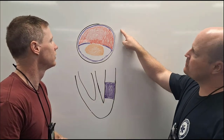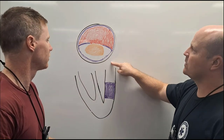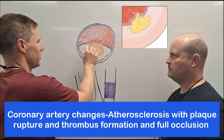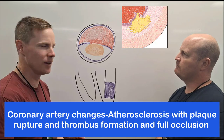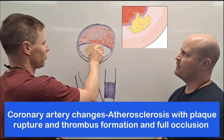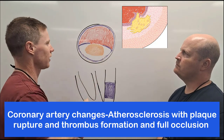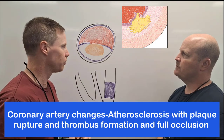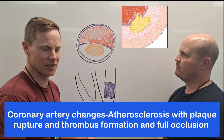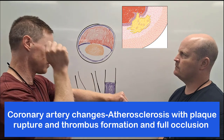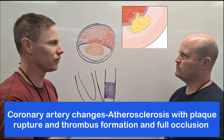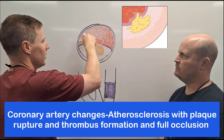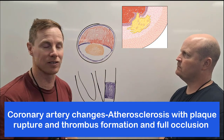Looking at our coronary artery, what do we see? We see atherosclerosis. We see a thin fibrous cap and it looks like it's ruptured, and it's injured or damaged the inner layer of the blood vessel. And as I said in the previous videos, if you cut yourself you're damaging the blood vessel, a clot is going to form. And here we've got a massive clot that has formed.